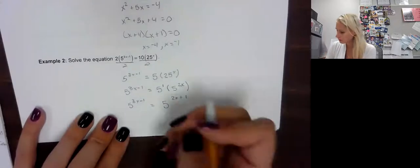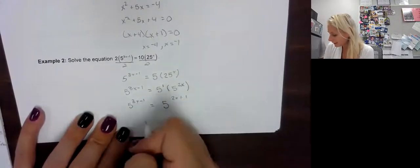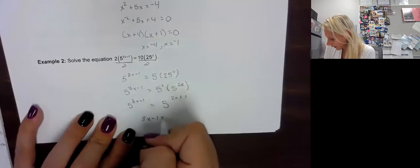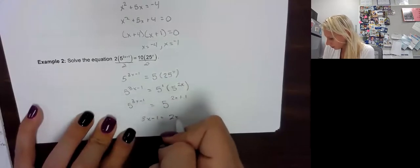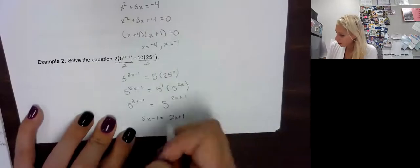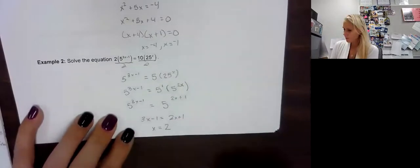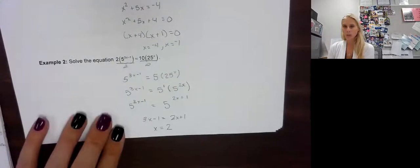Now that our bases are the same, we can set our exponents equal to each other and solve. 3x minus 1 equals 2x plus 1. So we get x equals 2. You can plug back in to make sure that works, and it does.